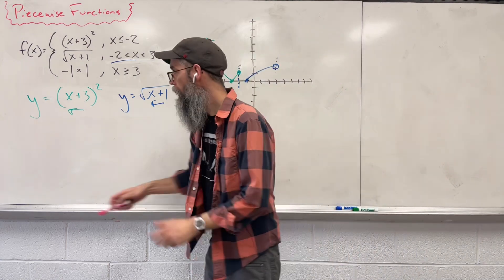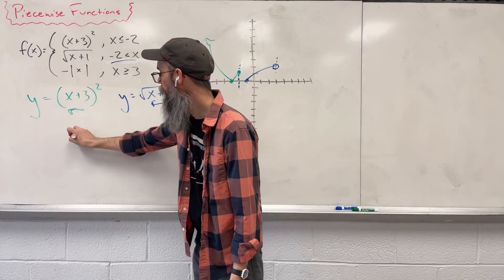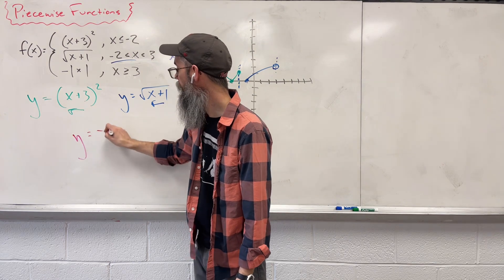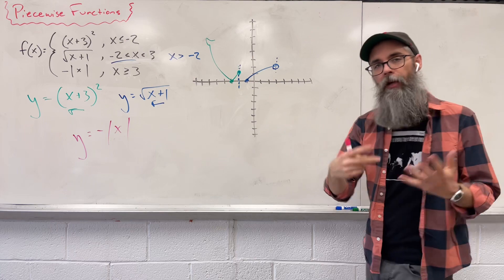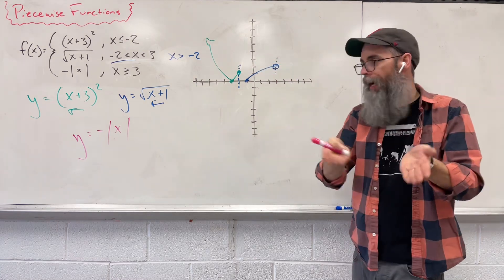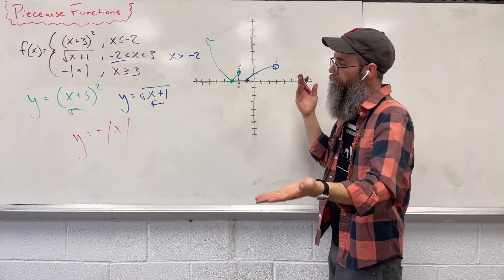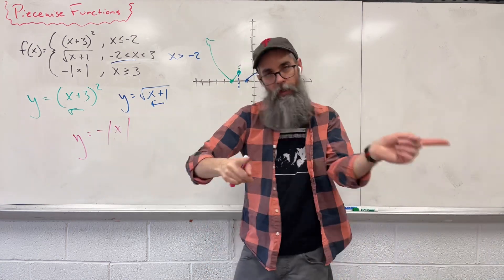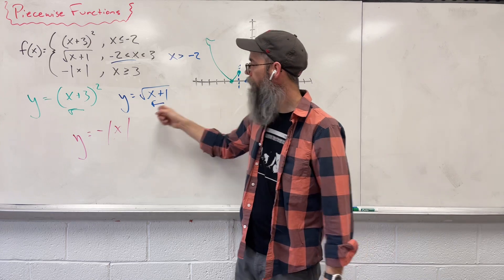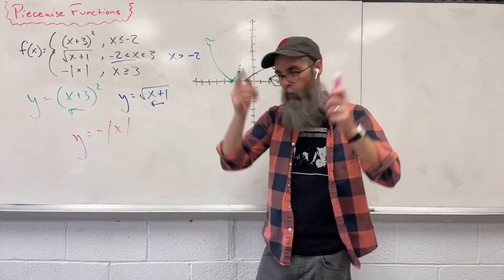Last one. We have y equals negative absolute value of x. Absolute value is going to give you a v-shaped graph. Using the same rules that we have here, we don't have anything else on the inside. So we're not shifting left or right. If we had something on the outside afterwards, we'd go up and down.